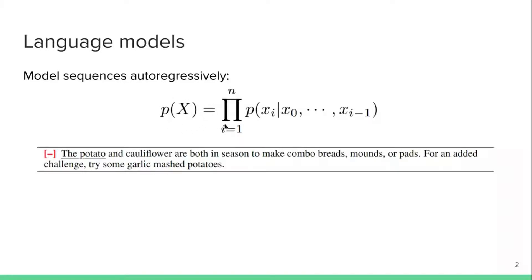We're going to model this probability distribution of the text as the probability of the word xi given all the words from 0 to xi-1. You can train this language model on large amounts of text, and then during inference you can use this language model to generate some text. For example, maybe what comes out is 'the potato and cauliflower are both in season to make combo bread' and so on.